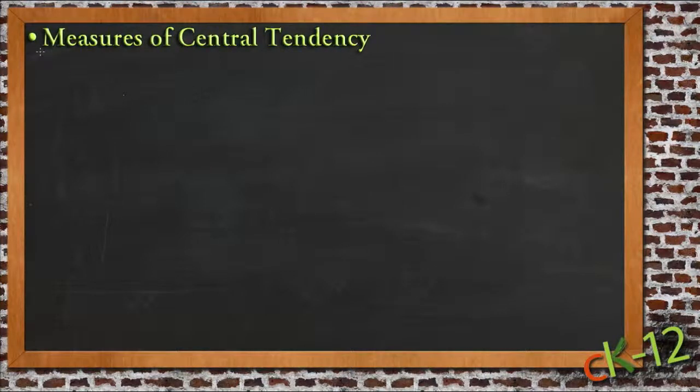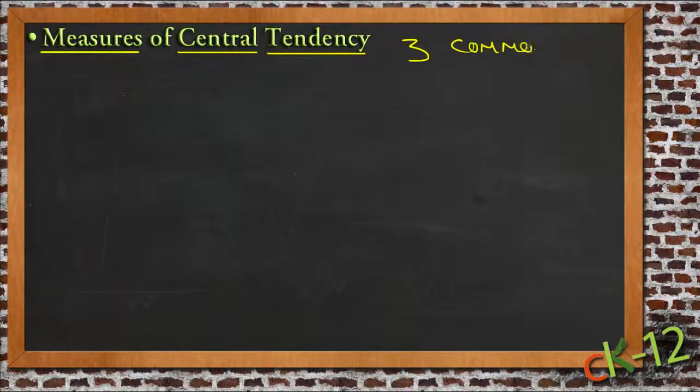Measures of central tendency are calculations of ways that values tend to group toward the middle or toward a certain area. There are three common measures of central tendency: the mean, the median, and the mode.